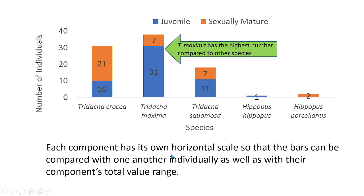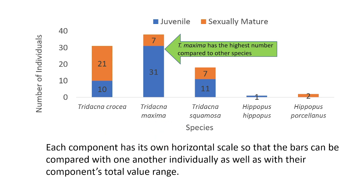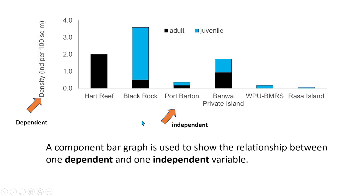Each component has its own horizontal scale, so that the bars can be compared with one another individually, as well as with their component's total value range. In this graph, we can see that among the five species of giant clams, Tridacna maxima has the highest number.